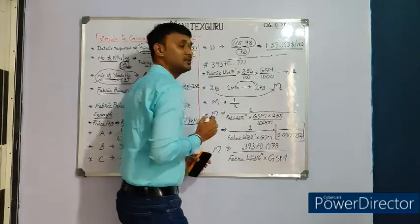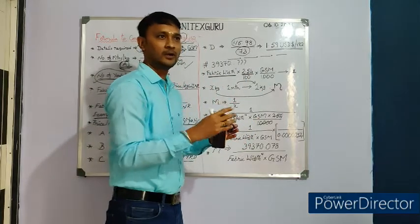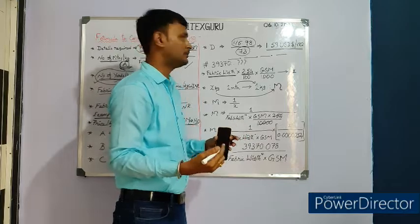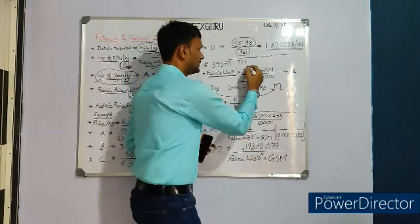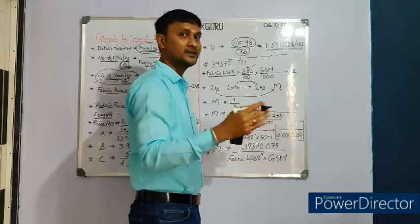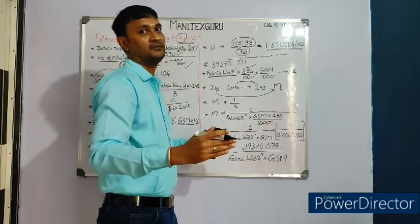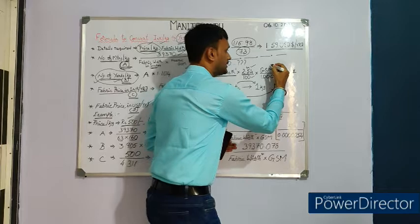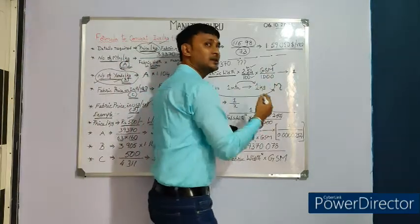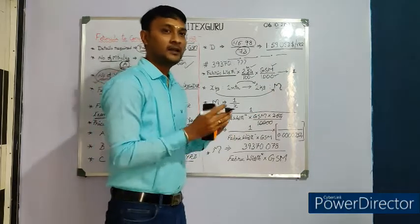First, take fabric width in inches and convert it to centimeters by multiplying by 2.54 (since 1 inch = 2.54 cm). Then convert centimeters to meters by dividing by 100. To get the linear weight of the fabric, multiply by GSM. This gives us the linear width of the fabric in grams, and dividing by 1,000 converts it to kilograms.